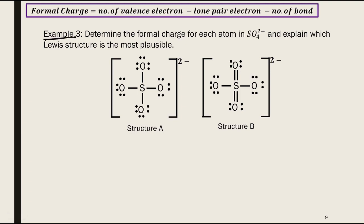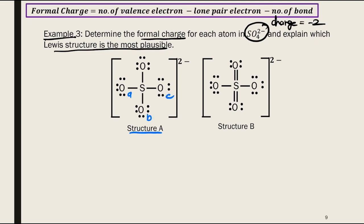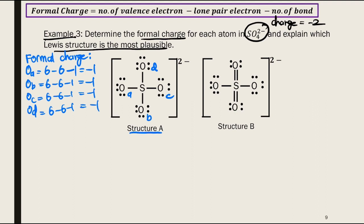For Example 3, you are asked to determine the formal charge for each atom in SO₄²⁻. There is a charge of negative 2 on that ion, and you are asked to explain which Lewis structure is the most plausible. We calculate formal charge for Structure A, labeling the four oxygen atoms A, B, C, and D. The total formal charge equals negative 2, which matches the charge of the polyatomic ion.